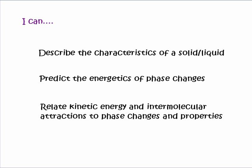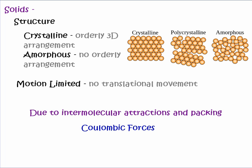You should be able to relate kinetic energy and intermolecular attractions to phase changes and some of the properties associated with these substances. For advanced chemistry it's important to understand the arrangement of the particles at the molecular level. With a solid, the main differences between states of matter are in terms of the closeness of the particles and their ability to move about freely. The particles are very closely packed, almost touching, and a solid really doesn't have the ability to move.